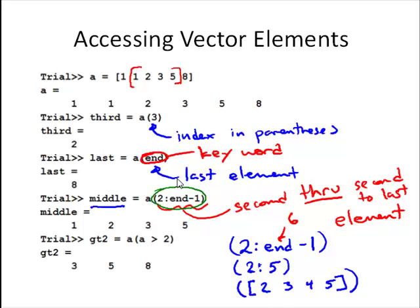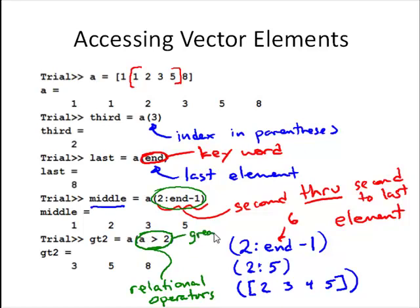Another thing we can do when accessing vector elements is use relational operators — greater than, less than, greater than or equal to, less than or equal to. In this case, using the greater than operator, we say: take all the elements of a that are greater than two, and assign them to a new variable called gt2 — short for greater than two. Those elements are the three, the five, and the eight, creating a new three-element array gt2.